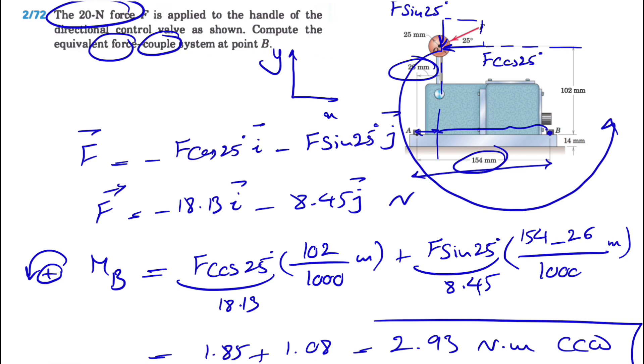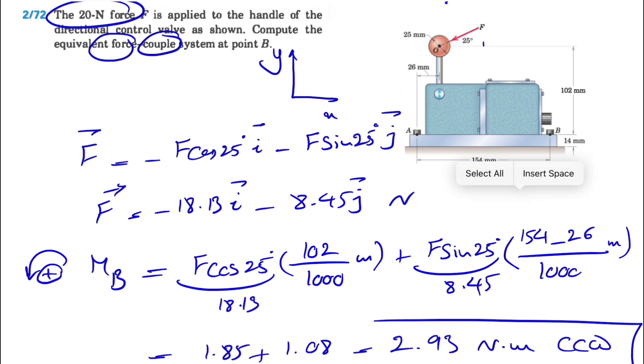The moment, since it's positive, is counterclockwise. To show the force couple system at point B, I'll clean this up so we can see better. Our force couple system at point B would be the force F at 25 degrees, and we have the moment MB which was 2.93 Newton meters.